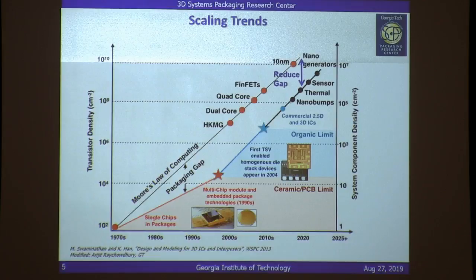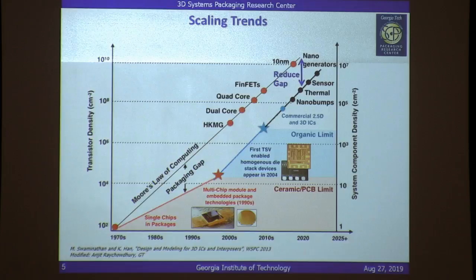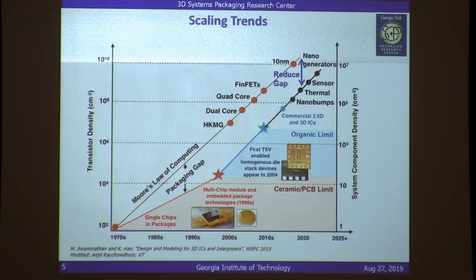That brings us to scaling trends. All of us are familiar with Moore's Law — the number of transistors doubles every 18 months on an IC. But there is another very important metric from the packaging side: system component density, which includes all interconnects and every other structure that allows you to build a system. Unless the density outside the chip keeps pace with transistor density inside the IC, even tiny transistors will lead to bulky systems.